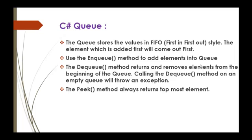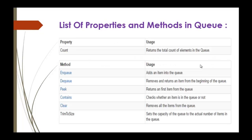Before jumping into Visual Studio, let us analyze the properties and methods present in the Queue. The property Count will count the number of elements present in the Queue. The available methods include Enqueue, Dequeue, Peek, Contains, Clear, and TrimToSize.